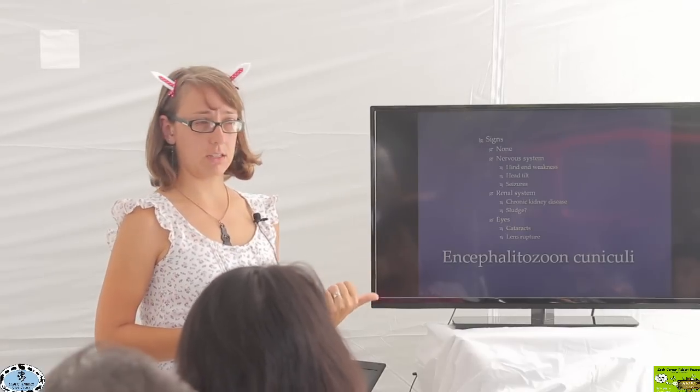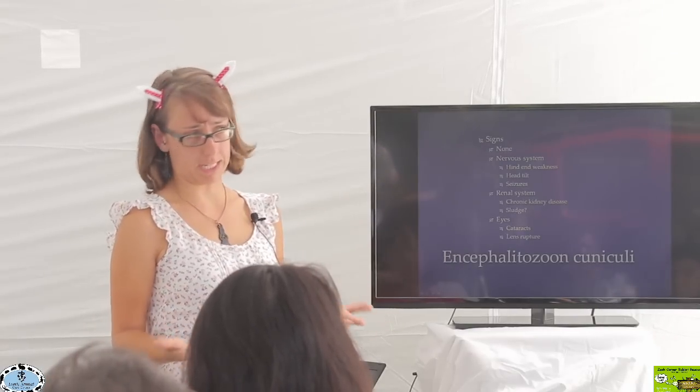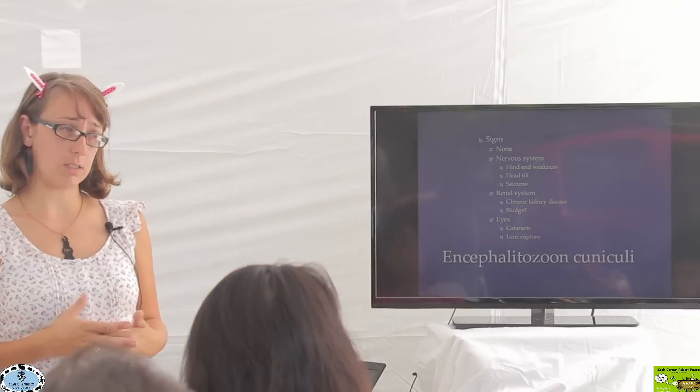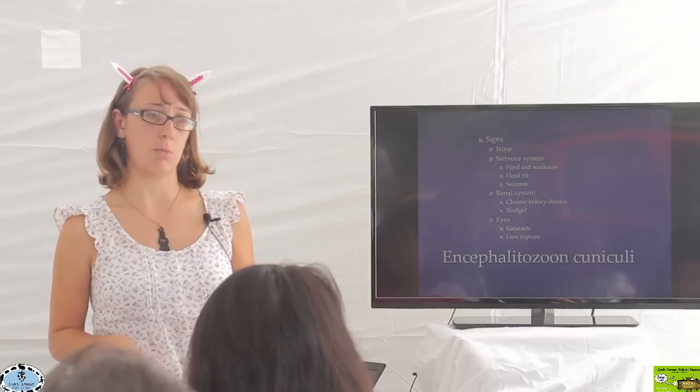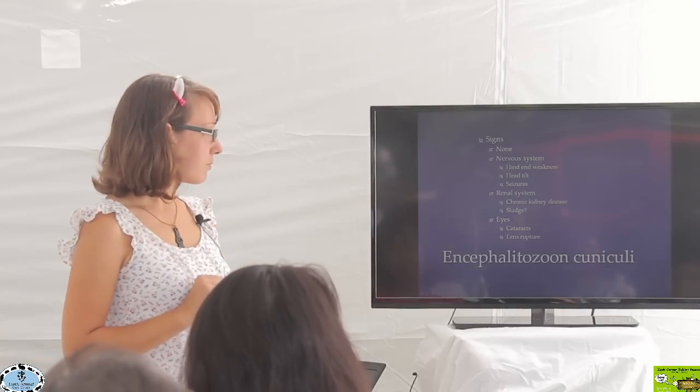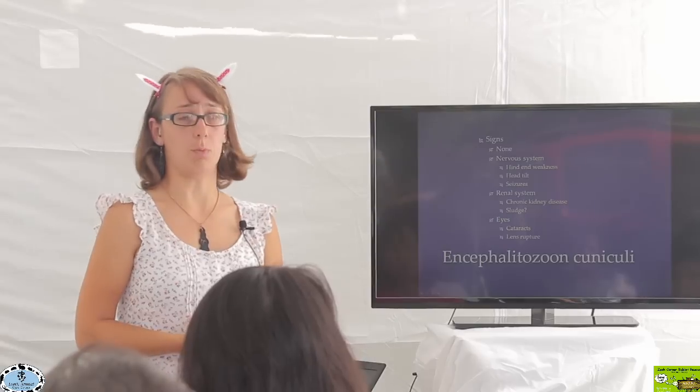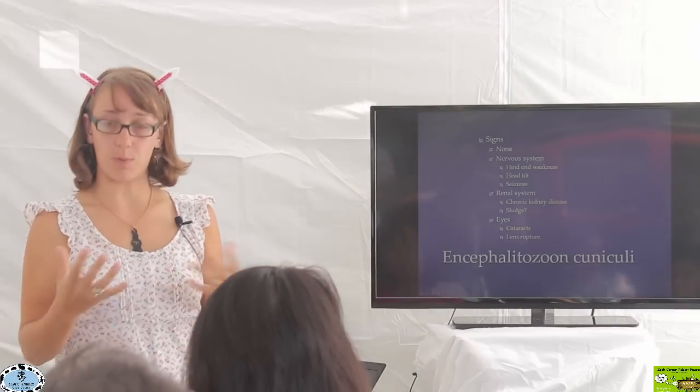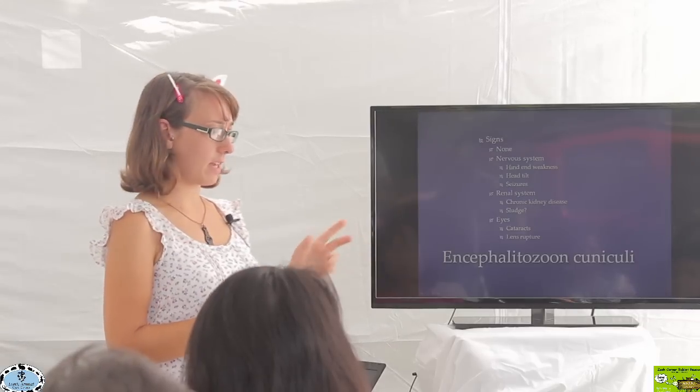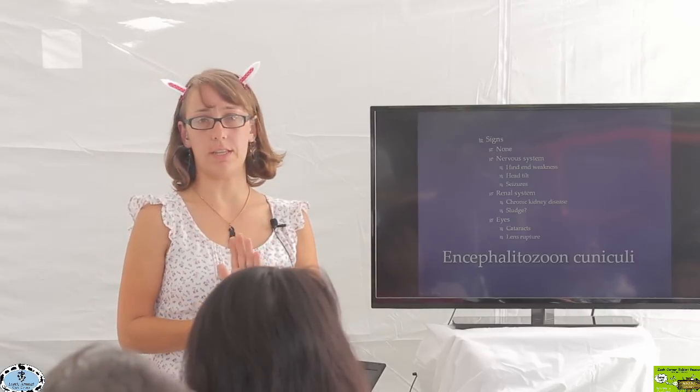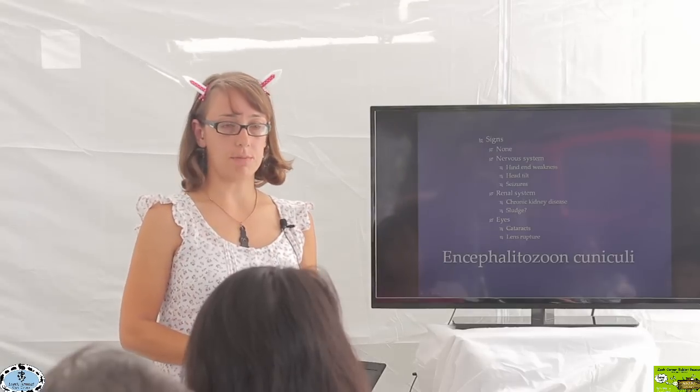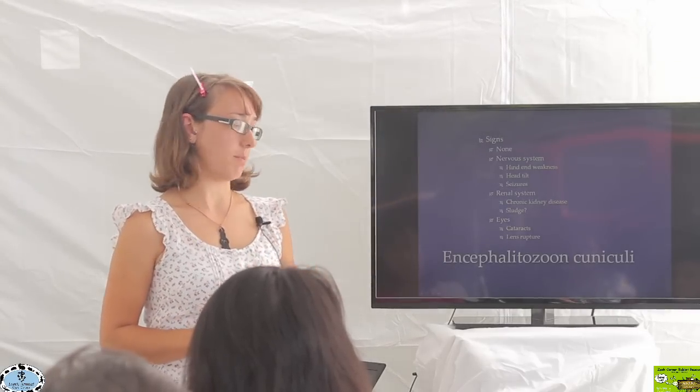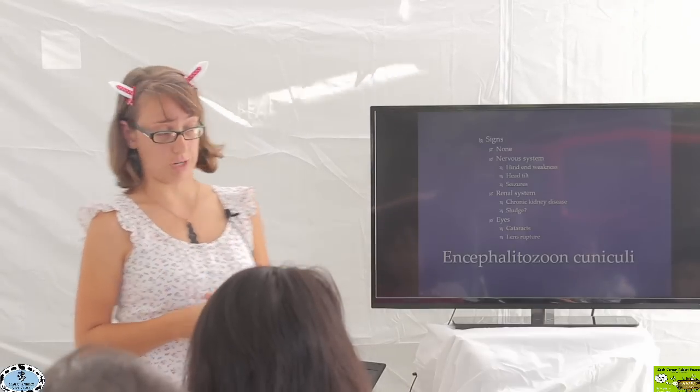You can see it affecting the renal system or kidneys, and it may present as chronic kidney disease, which may be rabbits drinking more, urinating more, losing weight, or it could potentially present as a sludge situation. It can also present with changes to the eyes. Rabbits with cataracts is something we'll often see as a sign from E. cuniculi, and you can even have the lens rupturing in the eye.